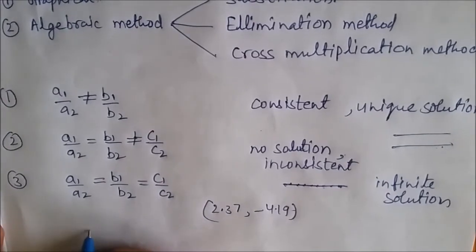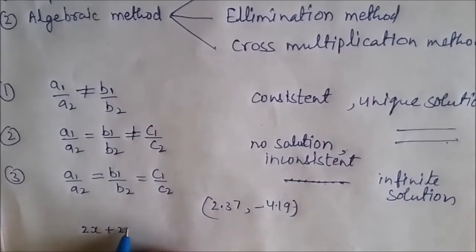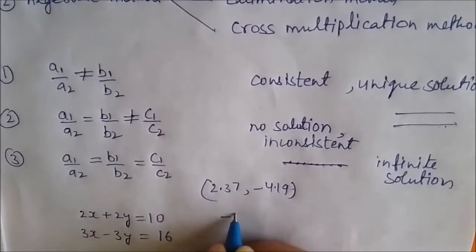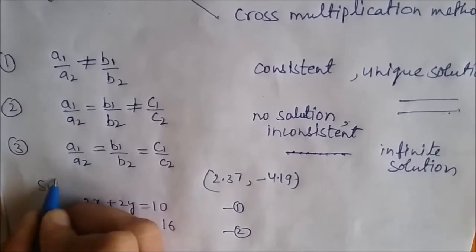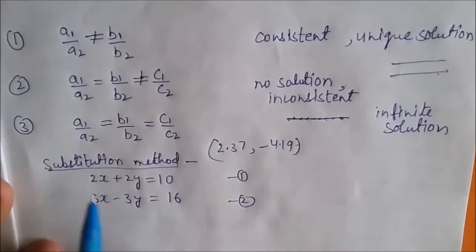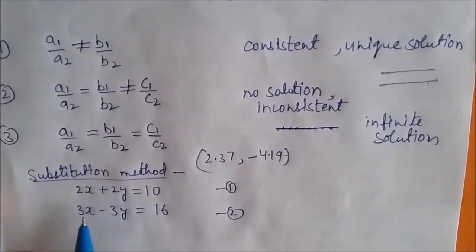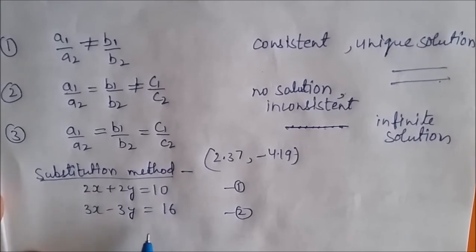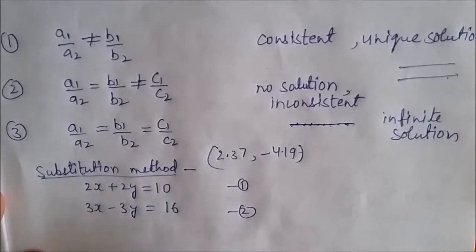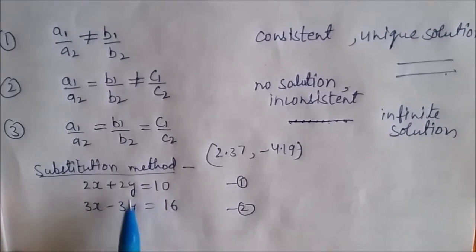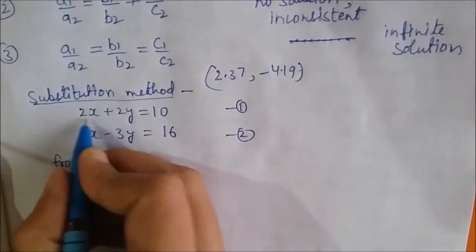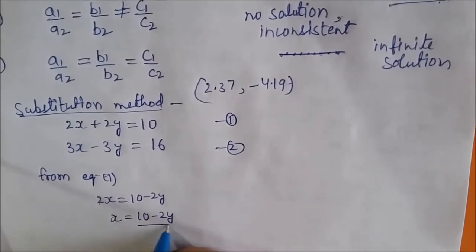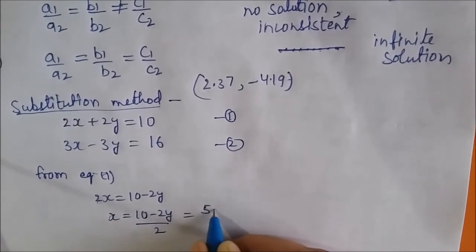Let us start with substitution method. Consider the system of linear equations: 2x plus 2y is equal to 10 (equation 1) and 3x minus 3y is equal to 16 (equation 2). In substitution method, we find the value of one variable in terms of the other, then substitute it in the other equation. From equation 1: 2x equals 10 minus 2y, so x equals (10 minus 2y) divided by 2, which simplifies to x equals 5 minus y.